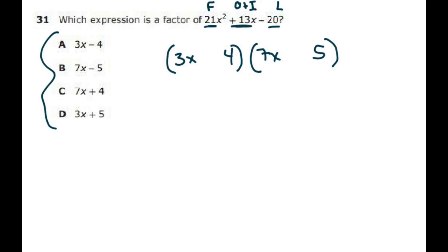And I want a positive 13. So if I put the 4 and 5 there, one's positive, one has to be negative. Because when you multiply those two, you need a negative 20.